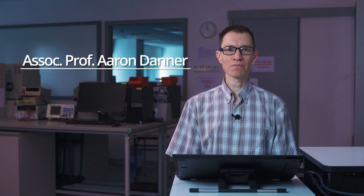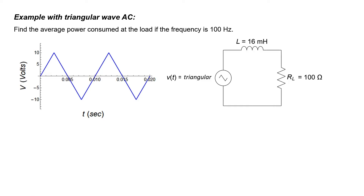Let's take a look at what happens when we use a source with a triangular wave instead of a sinusoid. In this circuit, we're going to be finding the average power consumed in the load resistor if the frequency of this triangular wave is 100 Hz.